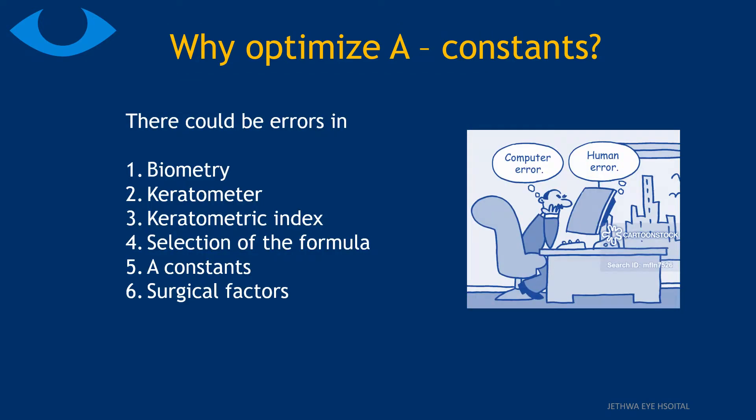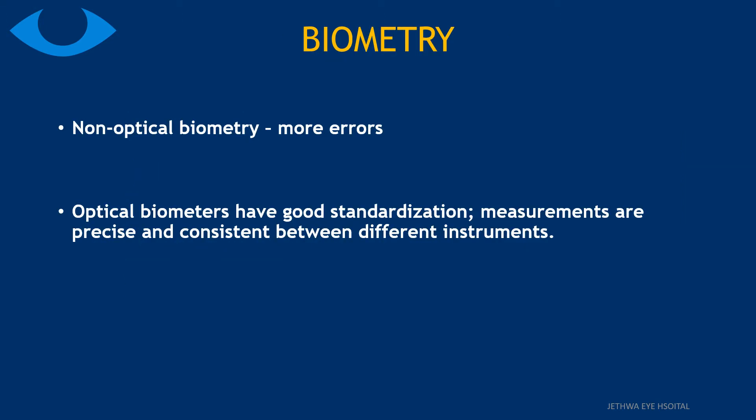There could be errors in biometry, keratometer, keratometric index, selection of formula, A-Constants, and surgical factors. When we do biometry using non-optical biometry, there are more chances of error. Optical biometers have good standardization and measurements which are precise and consistent between different instruments, so they are more reliable.